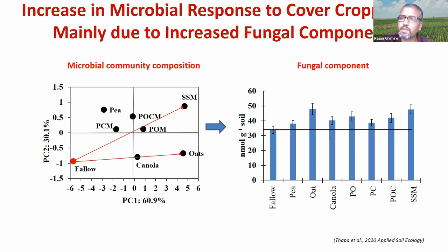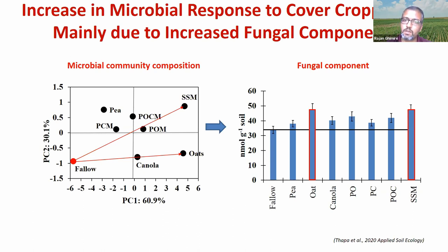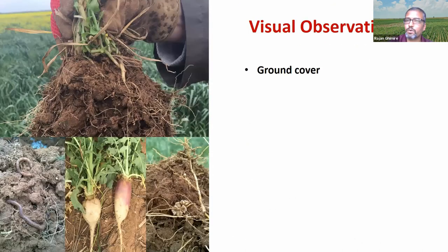We also looked at what may be the major driver. Why are those two treatments — oat and six-species mixture — having the most impact? You can see that those two treatments have the highest fungal component. More fungus means more carbon storage, and fungal networks in the soil can support more resilient and sustainable crop production. So the fungal component is really important, and cover cropping appears to help build that fungal community.